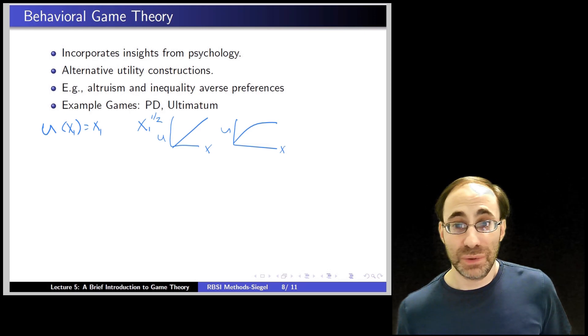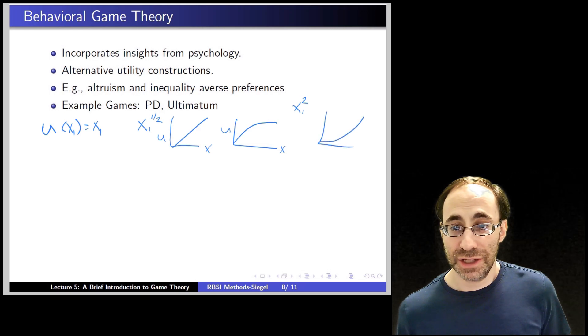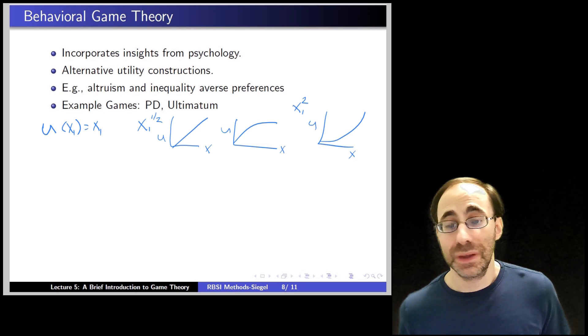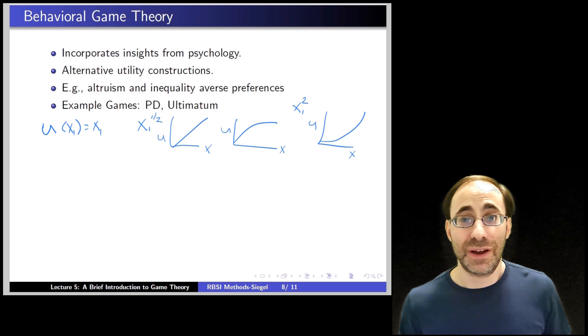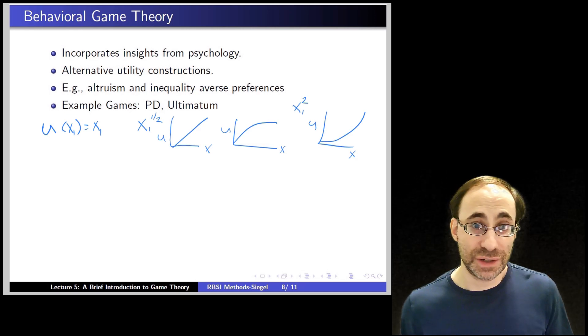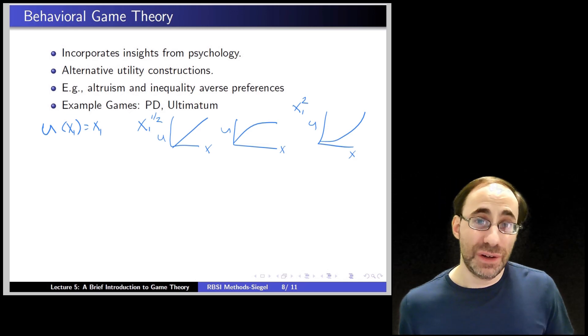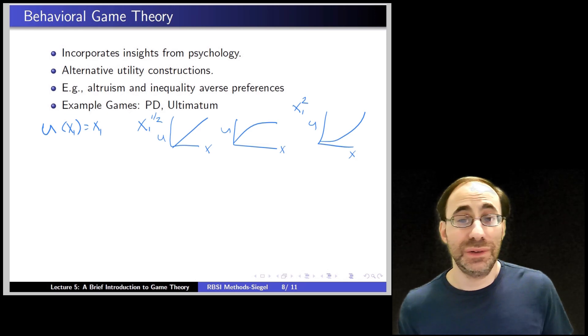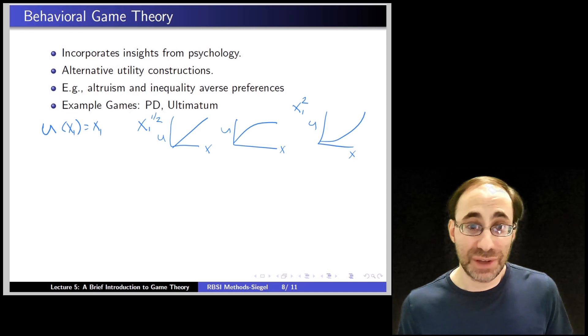In other cases, you might be risk-seeking. You might have utility that looks like this, with each additional unit giving you more benefit. These are all different ways of incorporating risk. We're going to focus on a different aspect, which is to tie what we've been talking about to laboratory experiments and how individuals actually behave when playing these kind of games.